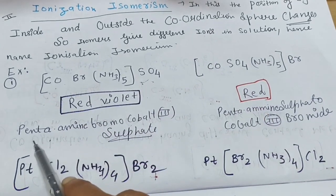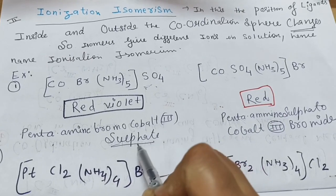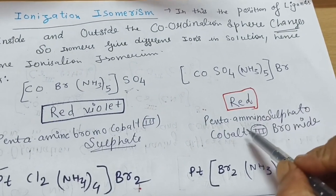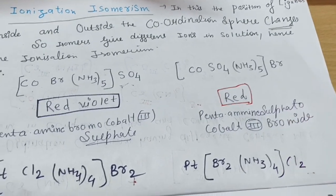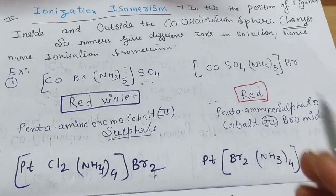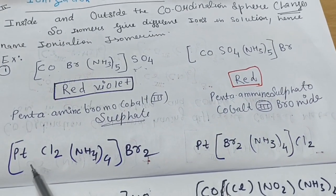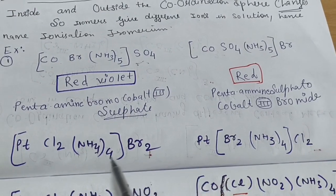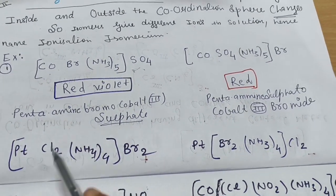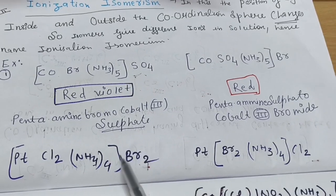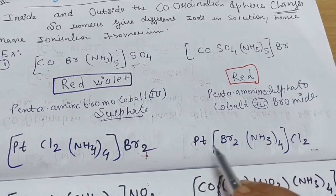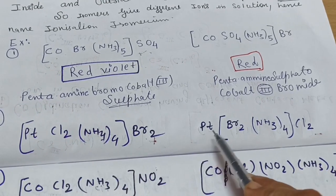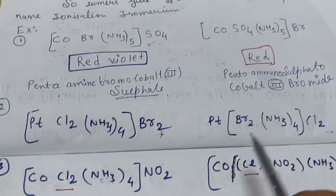The names reflect which ion is outside. The first complex is named pentaamine bromo cobalt(III) sulfate, and the isomer is pentaamine sulfato cobalt(III) bromide. Another example: [Pt(NH₃)₄Cl₂]Br₂ and its isomer [Pt(NH₃)₄Br₂]Cl₂, where Br₂ and Cl₂ exchange between the coordination and ionization spheres.